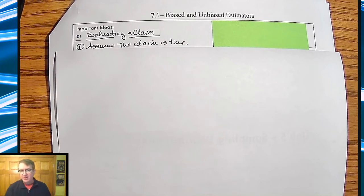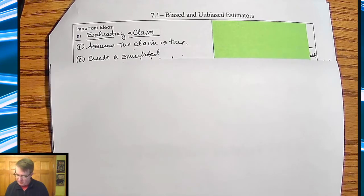Evaluating a claim. There are three steps to evaluating a claim. First of all, you have to assume that the claim is true. You can't prove that anything's true. You can just prove things don't work. That's kind of the whole basis of statistics.